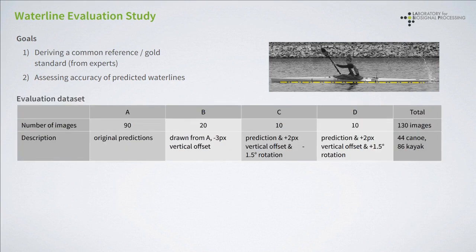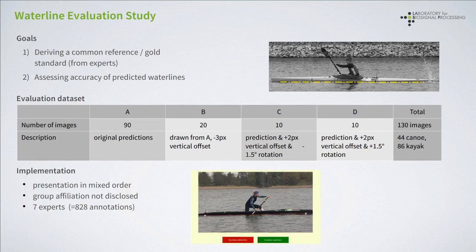We constructed an evaluation dataset consisting of four groups. Group A consisted of 90 images in which the predicted waterlines were embedded as predicted by our method. Groups B, C, and D consisted of 20, 10, and 10 images respectively, based on adding some distortions to the predictions in order to prevent habituation and to force interaction from experts. The images were presented without disclosing group affiliation via a web-based frontend, and we were able to collect a total of 828 annotations from seven experts.